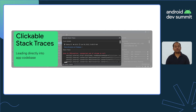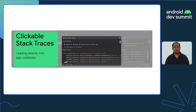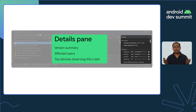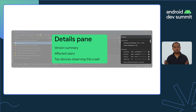Clickable stack traces is one of my favorite features of App Quality Insights, as they directly link into the app's code base. This helps you to narrow down immediately the lines of code which are causing the crash in your app. And because some crashes can be very device-specific, App Quality Insights also shows you the most popular devices on which this crash was observed.